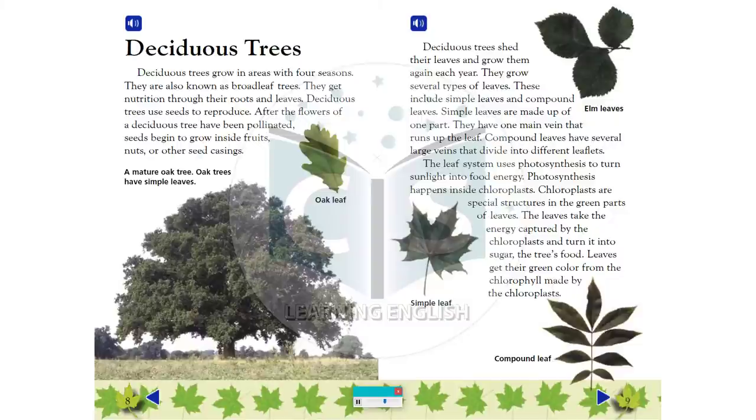Photosynthesis happens inside chloroplasts. Chloroplasts are special structures in the green parts of leaves. The leaves take the energy captured by the chloroplasts and turn it into sugar, the tree's food. Leaves get their green color from the chlorophyll made by the chloroplasts.